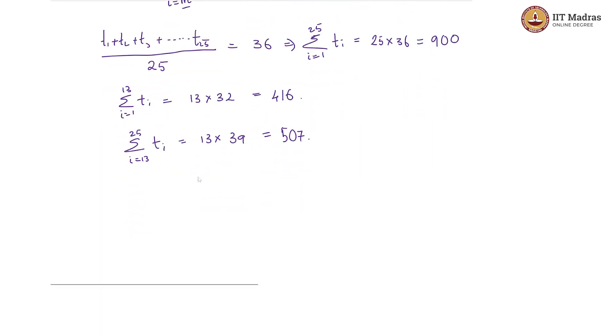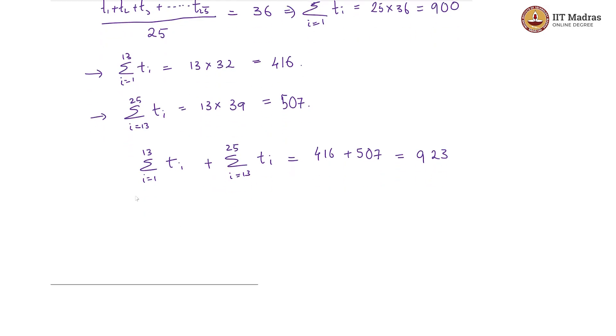So, now what we have is the sum of the first 25 terms is there, sum of the first 13 terms is there and sum of the last 13 terms is there. So, if I added these two, I will get sigma i goes from 1 to 13 t i plus sigma i goes from 13 to 25 t i is equal to 416 plus 507, which is 923.